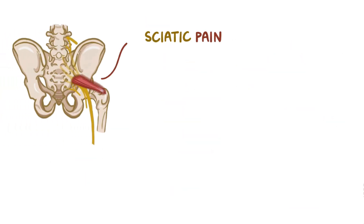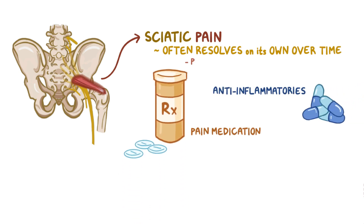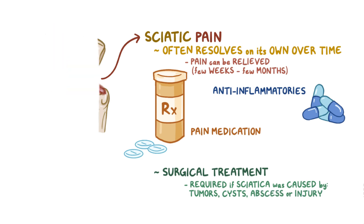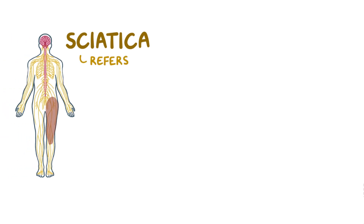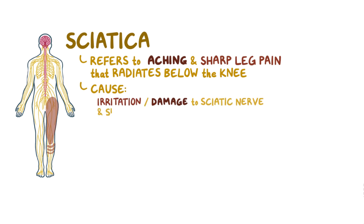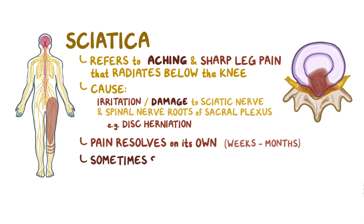Sciatic pain caused by inflammation often resolves on its own over time. With pain medication and anti-inflammatories, the pain can be relieved in a few weeks to a few months. Surgical treatment is required if the sciatica was caused by tumors, cysts, abscesses, or injury to the spinal cord. As a quick recap: sciatica refers to aching and sharp leg pains that radiate below the knee. It is caused by irritation or damage to the sciatic nerve and spinal nerve roots of the sacral plexus, most commonly as a result of disc herniation. Typically the pain resolves on its own over a few weeks to months, but sometimes surgery is required.